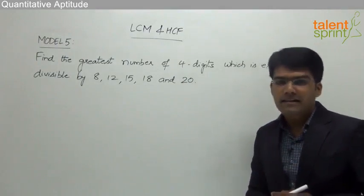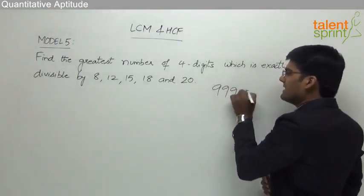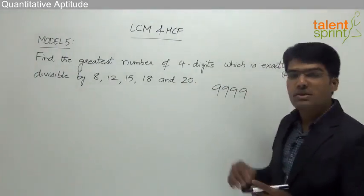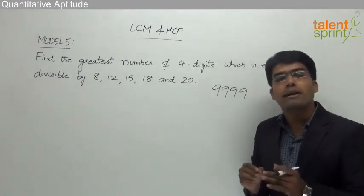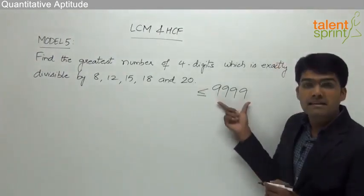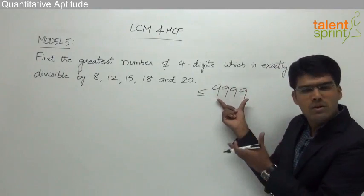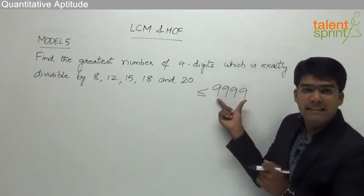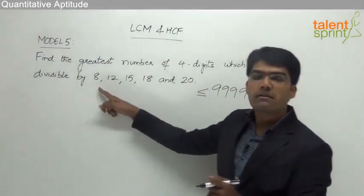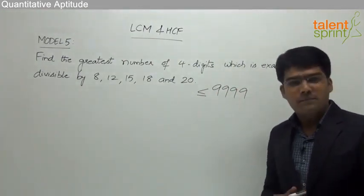We know that the greatest number of four digits is 9999. As per the question, we are required to find a number which is less than or equal to 9999 — the greatest four-digit number — but divisible by all the given values: 8, 12, 15, 18, and 20.